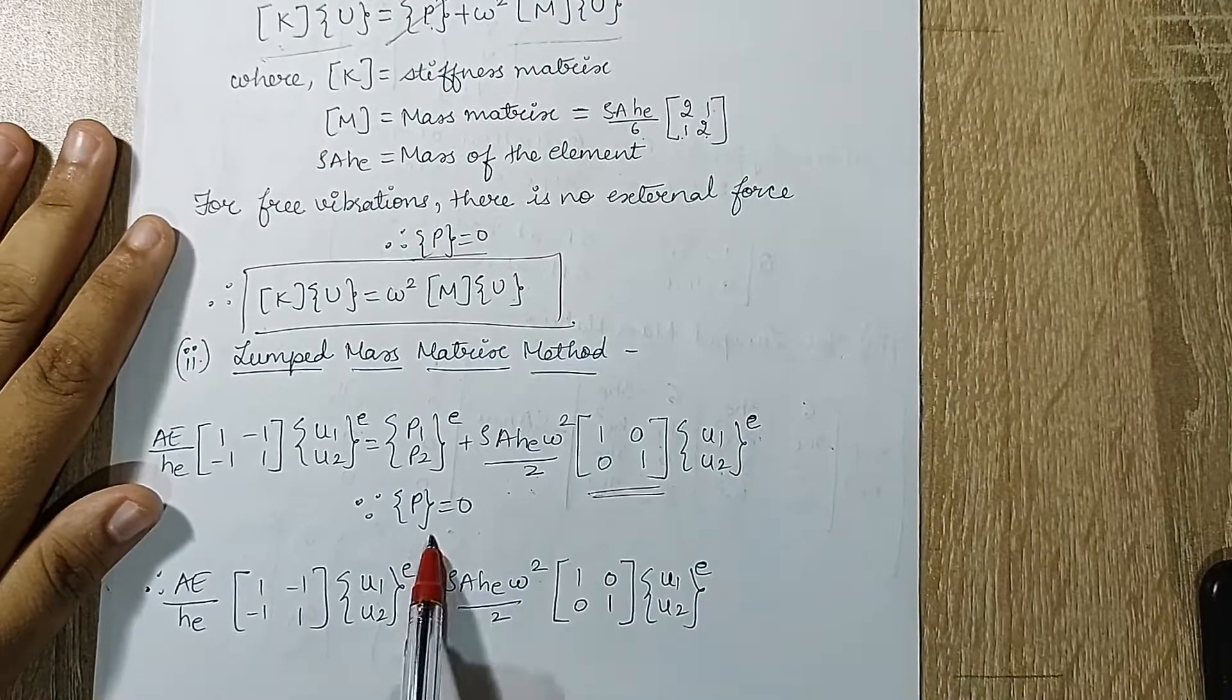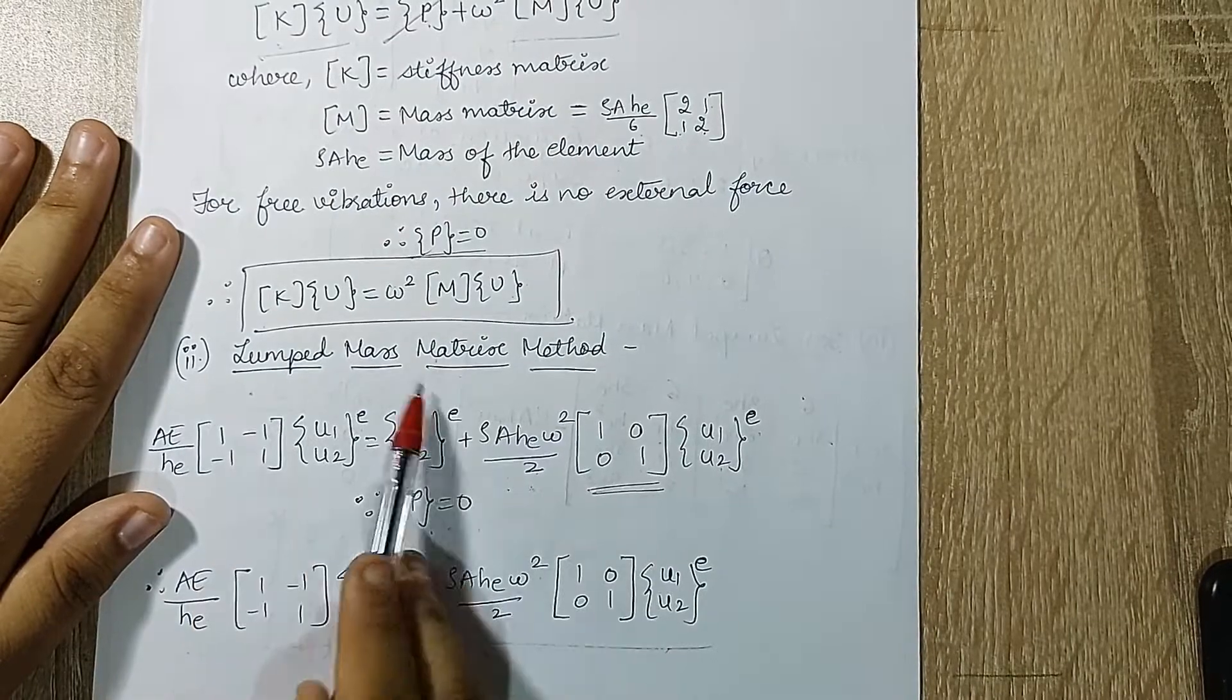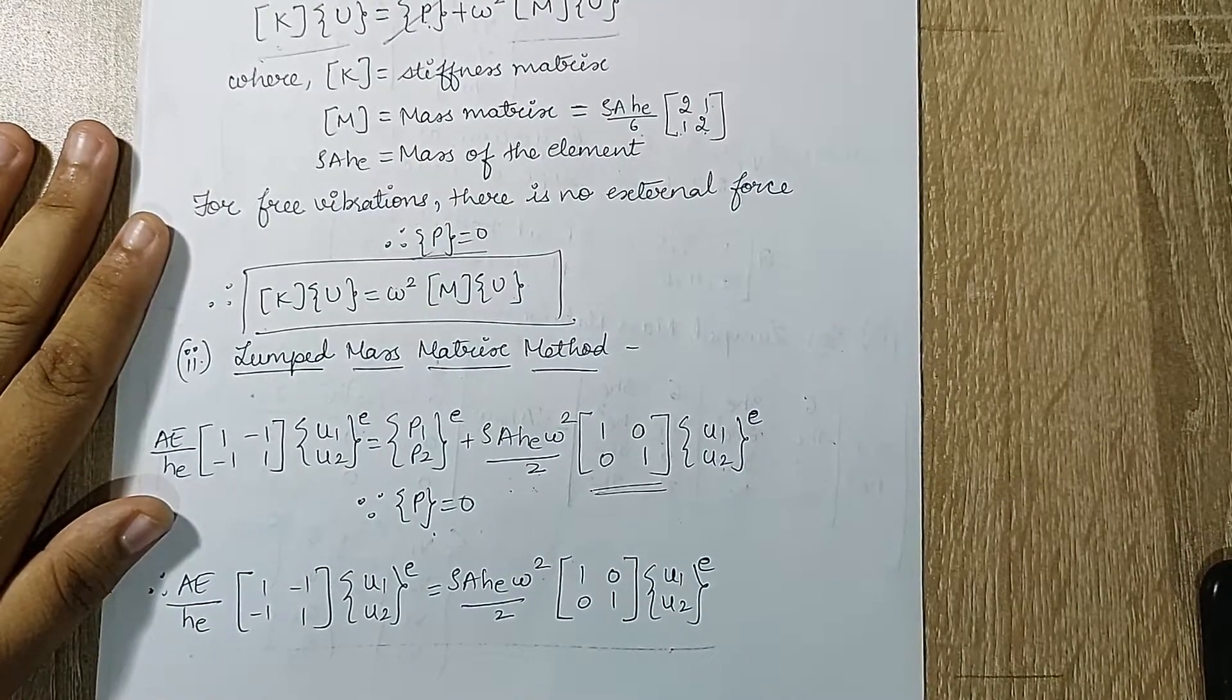Again you have {u1, u2} raised to E. Since P is zero, this is what remains. So this equation is supposed to be used when lumped mass matrix is what is asked for.